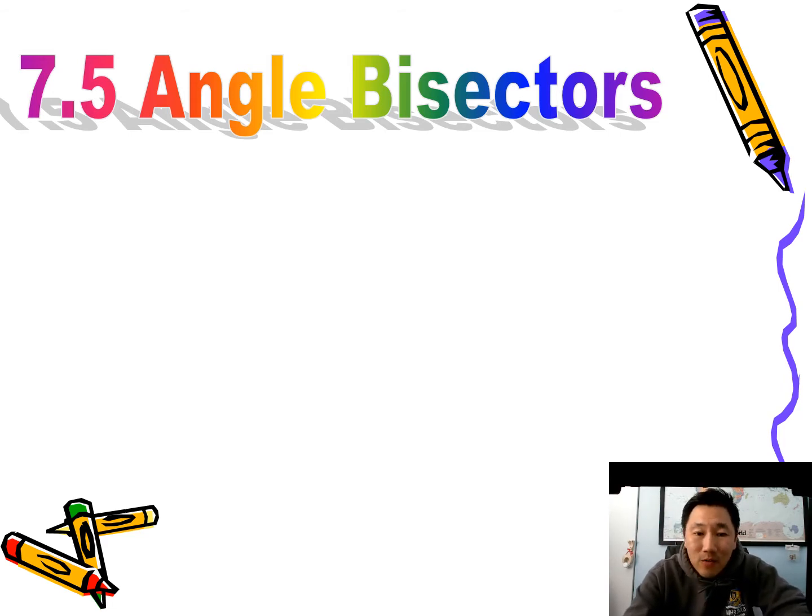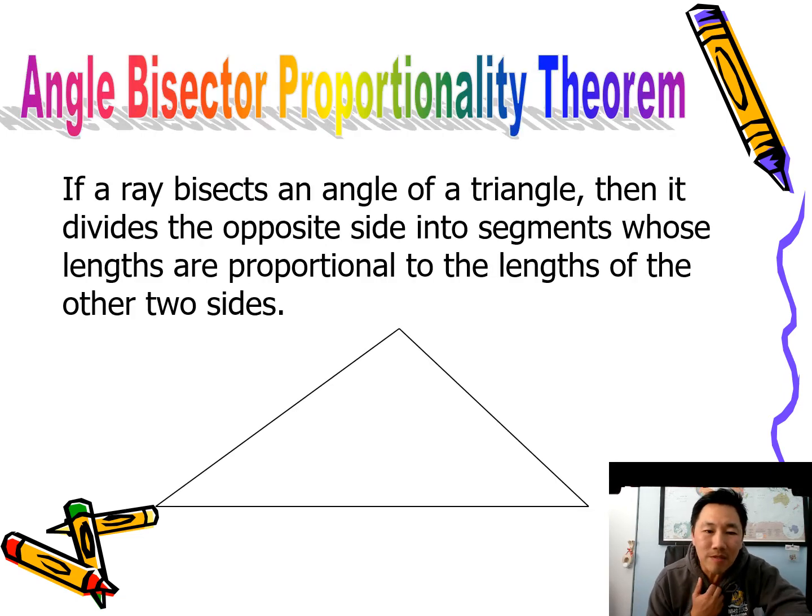And then with that comes specific properties: the Angle Bisector Proportionality Theorem. If a ray bisects an angle of a triangle, then it divides the opposite side into segments whose lengths are proportional to the lengths of the other two sides.